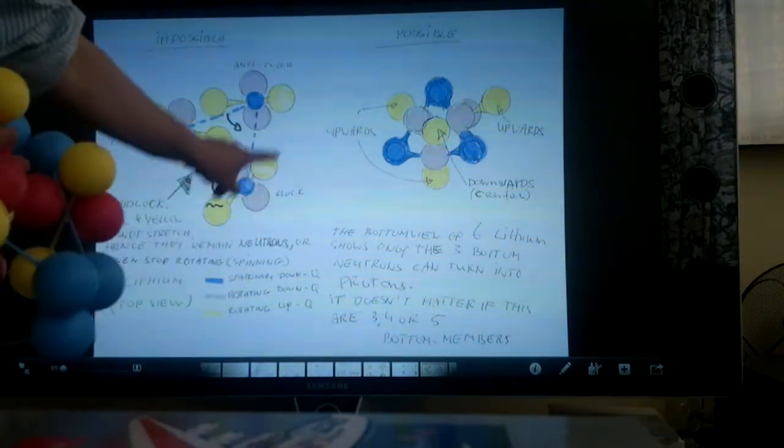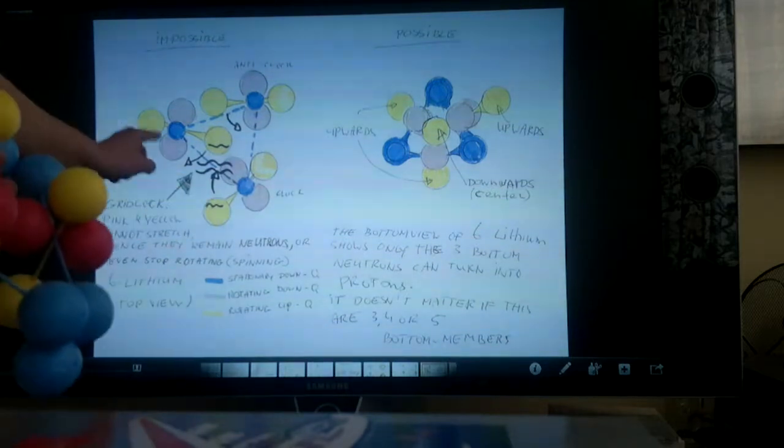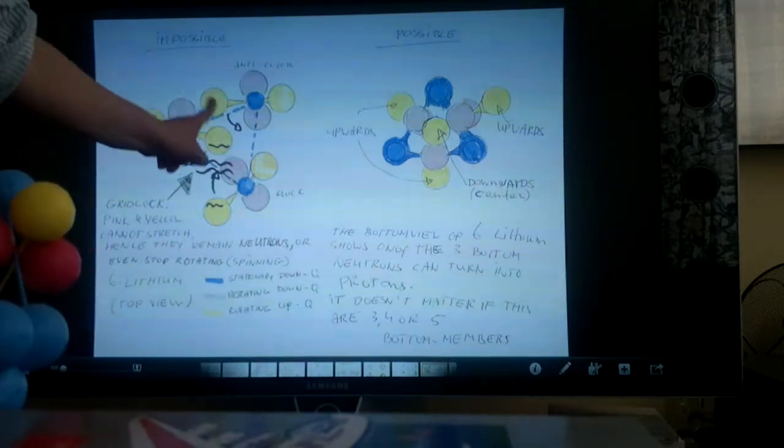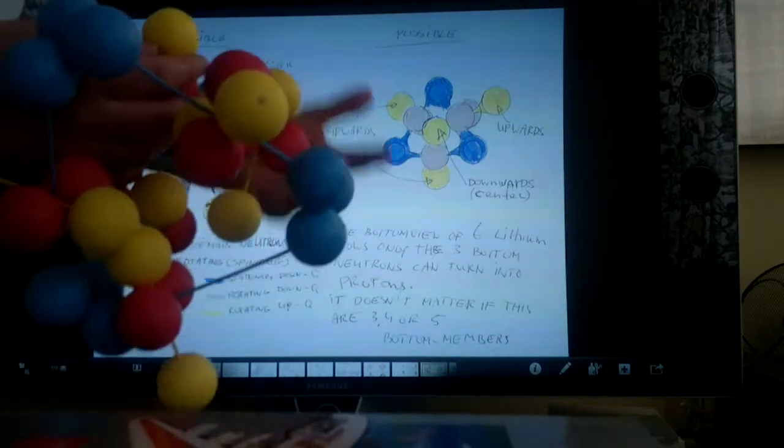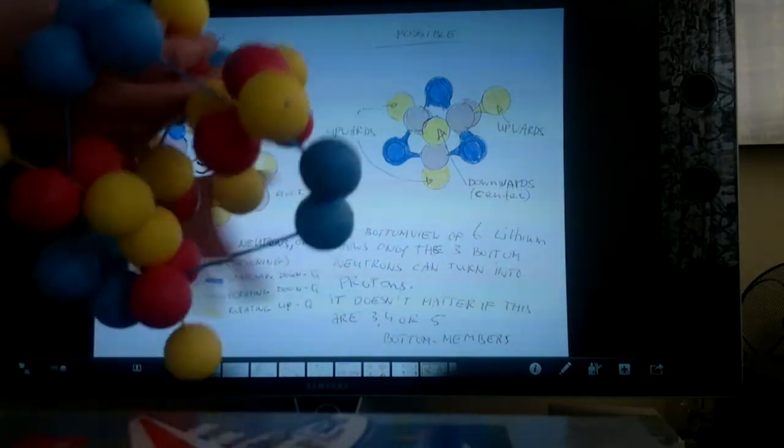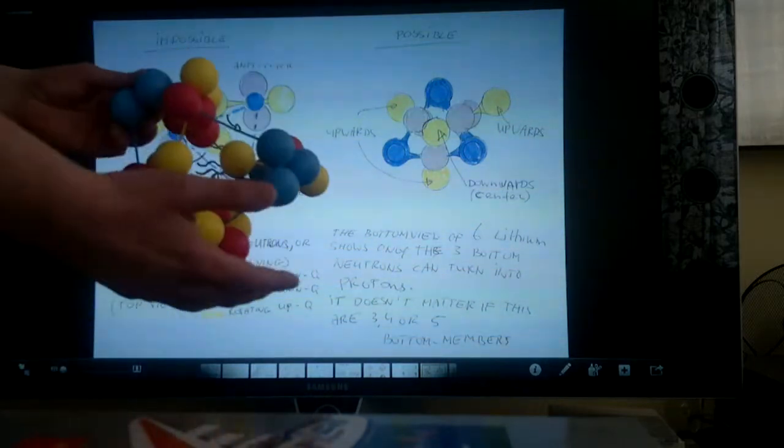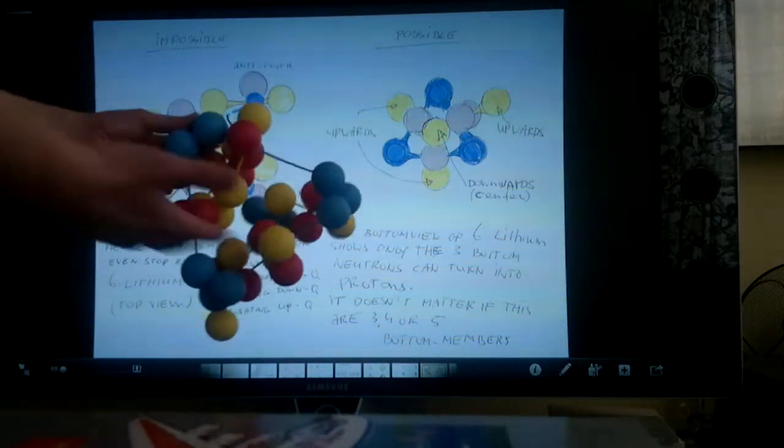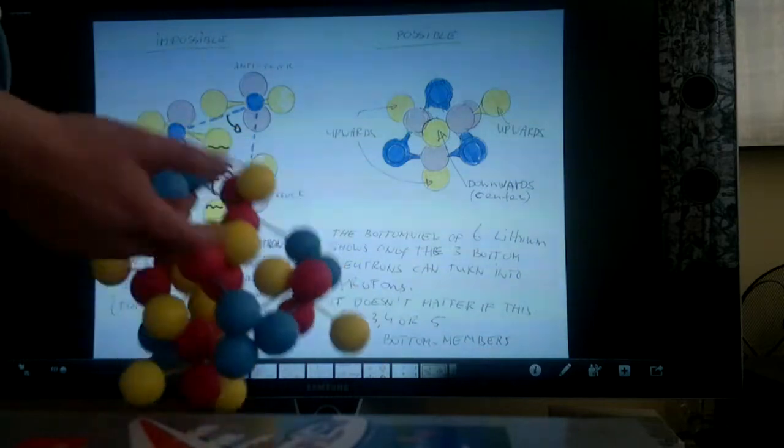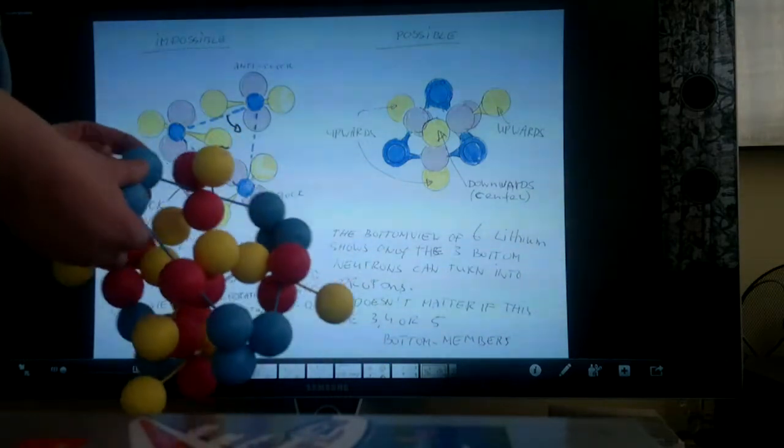This is the top view of 6-Lithium and when this one moves clockwise, because nature wants to turn as many of these as possible, it makes perfect sense. The more turned, the less resistant there is, so nature likes to turn them around when they get hit by a graviton.